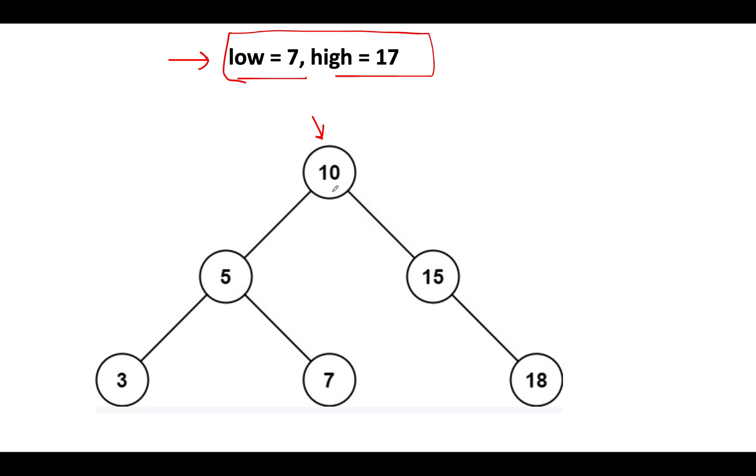We are given the root of the binary search tree. The root here turns out to be 10. Does 10 lie within this range? The answer is yes. 10 is greater than 7 and 10 is less than 17. So what do we do in such case? We need to iterate both its children, the left subtree and the right subtree. Also, 10 becomes part of our answer. So let's create a global variable and let's add 10 to it. Initially it was 0, and then we have updated this value to 10.